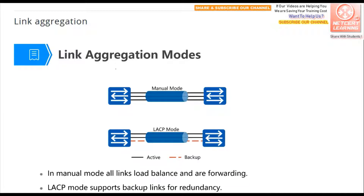When we configure link aggregation, we should know there are two modes. One is manual mode and another is LACP mode. In manual mode, we configure link aggregation statically — we create a logical interface on both sides and put physical interfaces into the logical interface. After configuring this on both sides, the link will work in link aggregation mode. The two switches will not send any protocol packets to negotiate; they simply operate in link aggregation mode.